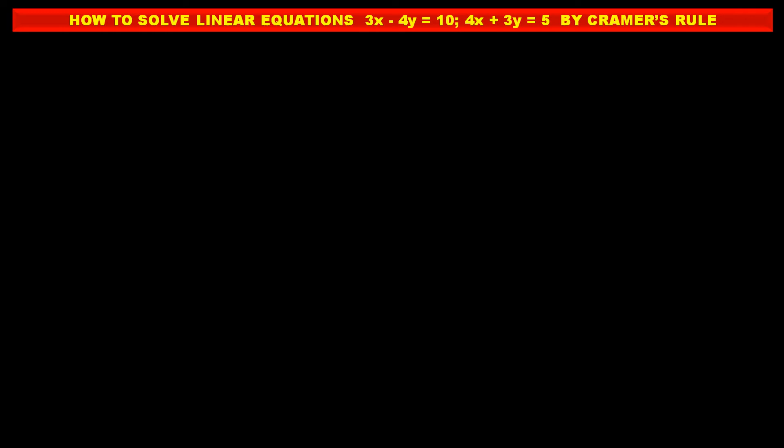See how to solve these linear equations by Cramer's rule. The first equation is 3x minus 4y equals 10 and the second is 4x plus 3y equals 5. Both equations are given in proper form: Ax plus By equals C, so no change is needed.